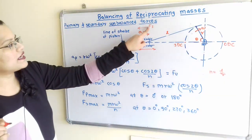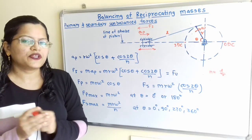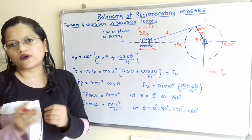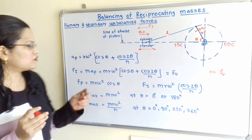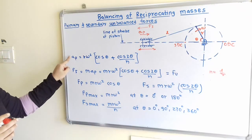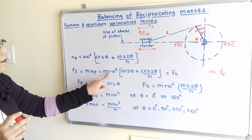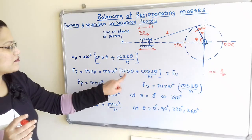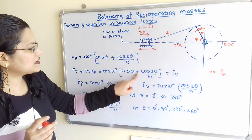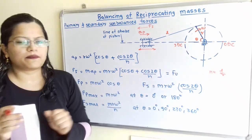The inertia force Fi is calculated as force equals mass times acceleration: Fi = M·Ap = M·R·ω²·(cos θ + cos 2θ / N).